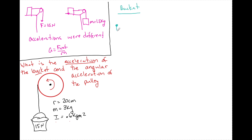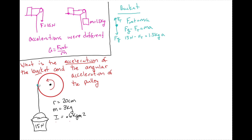On the bucket, two forces act: gravity FG and the tension force FT. Calling the downward direction positive, F net equals MA gives us: FG minus FT equals MA, or 15 Newtons minus FT equals 1.5 kilograms times A. The particles on the outside of the pulley accelerate at the same rate as the bucket, so A equals R times alpha. This relationship is the commonality between the linear and angular equations. Right now I have two unknowns — A and FT — so let's look at the pulley.